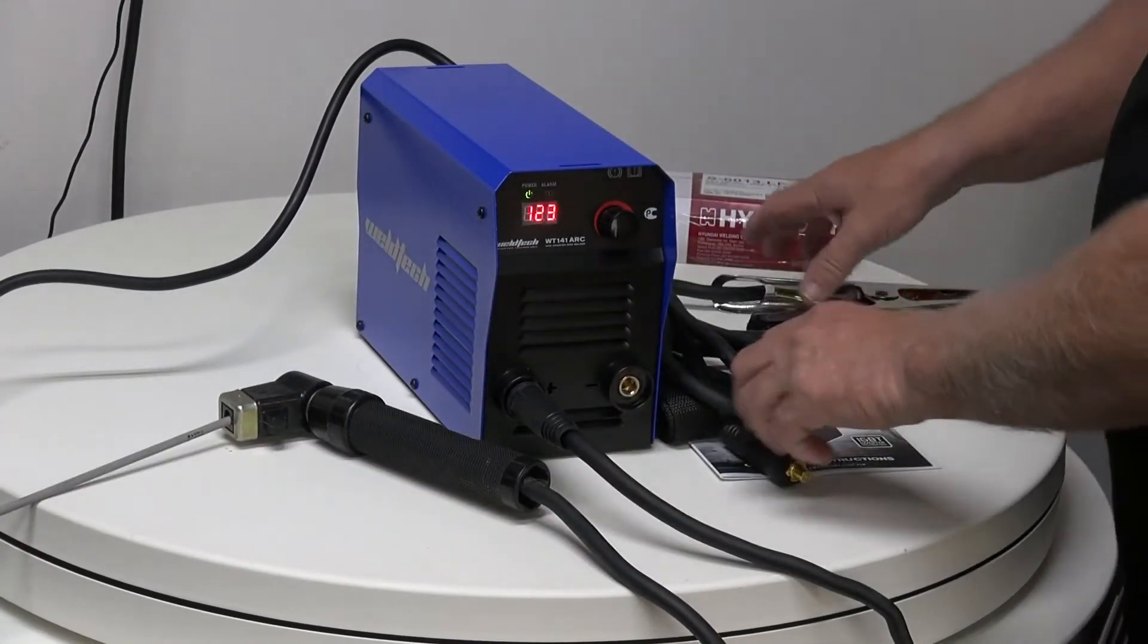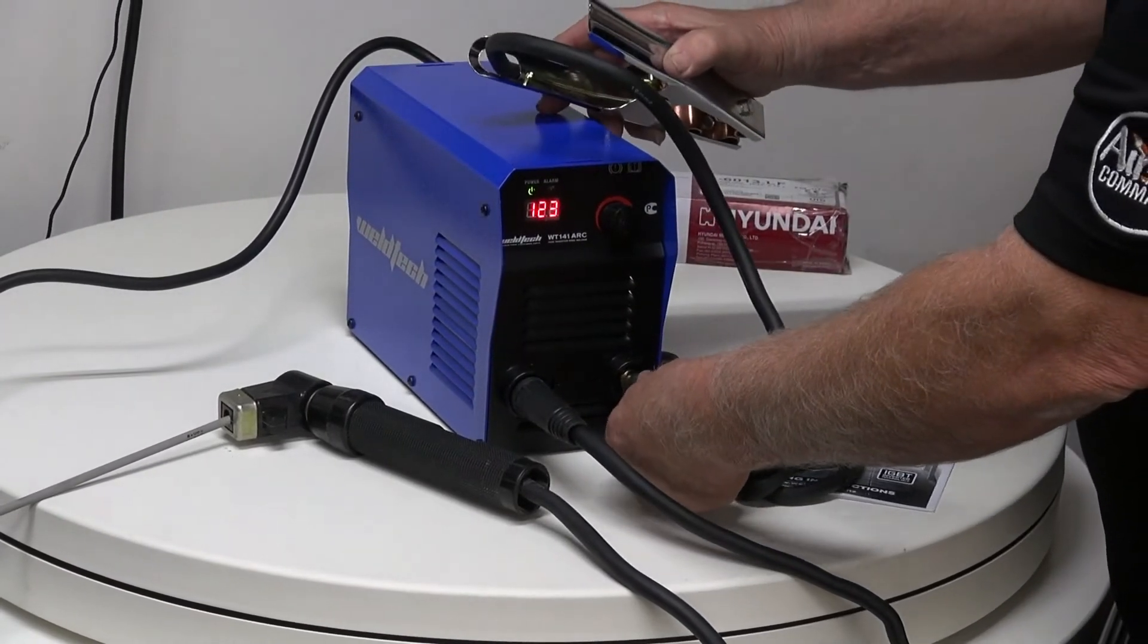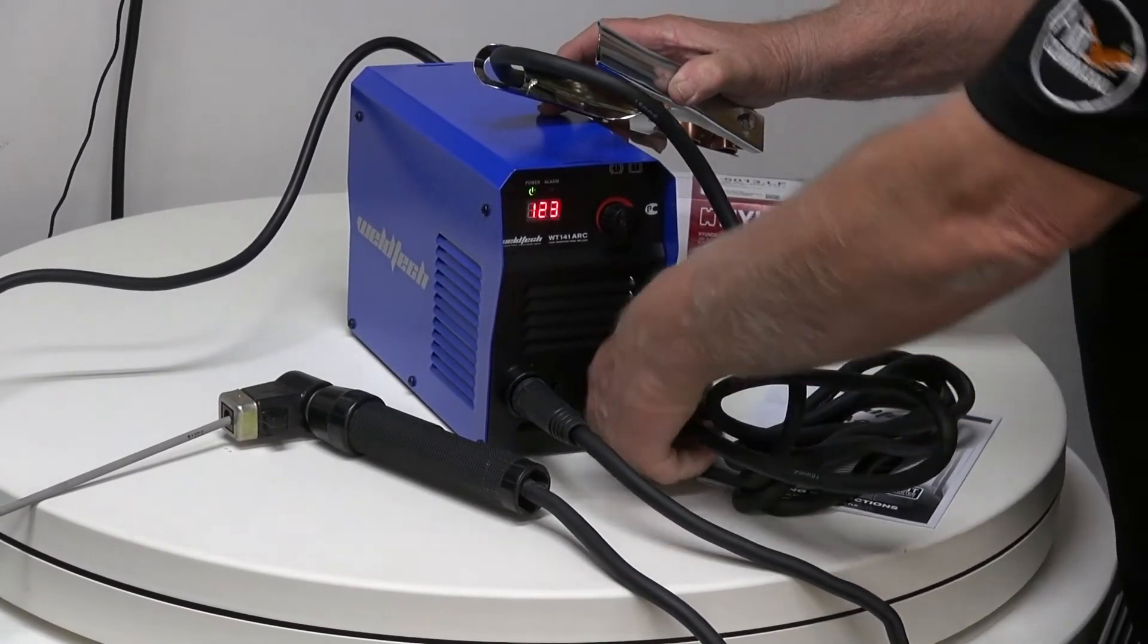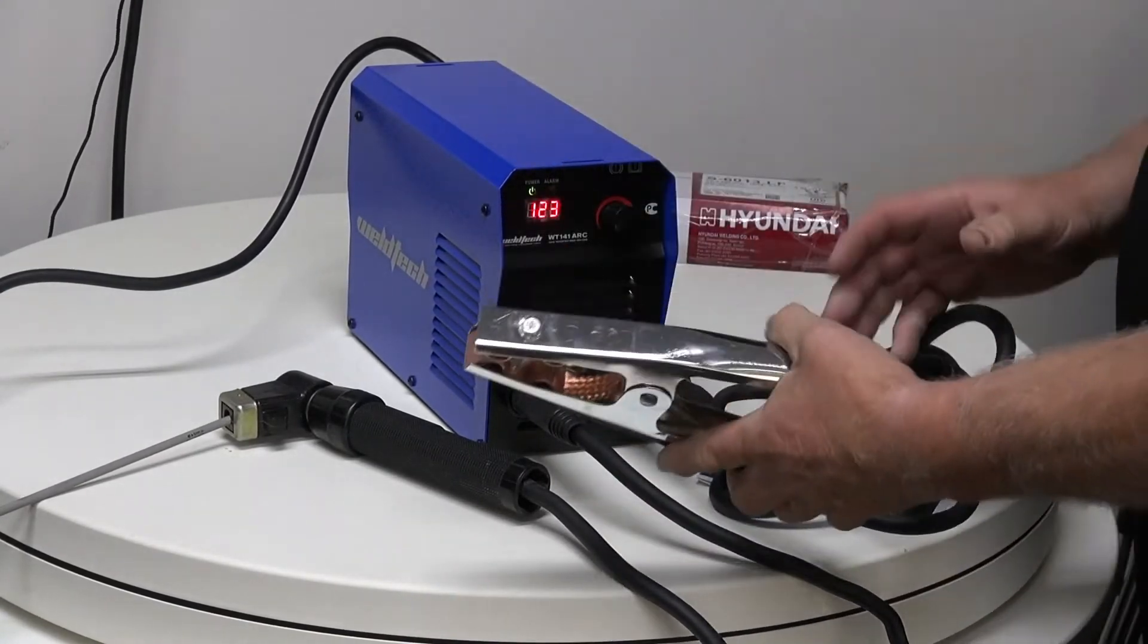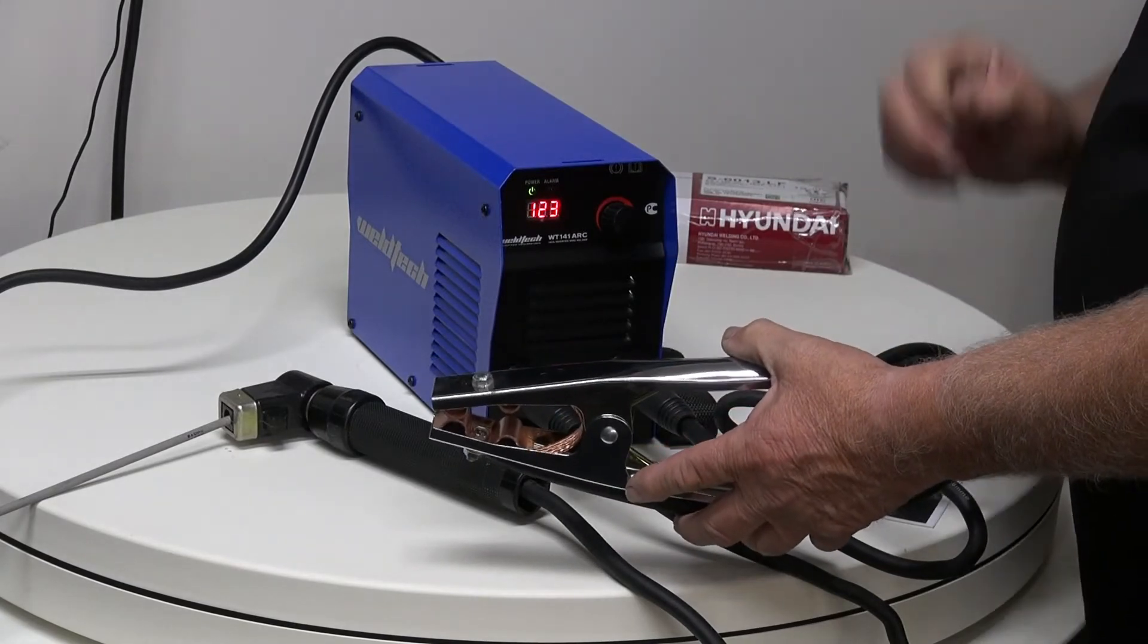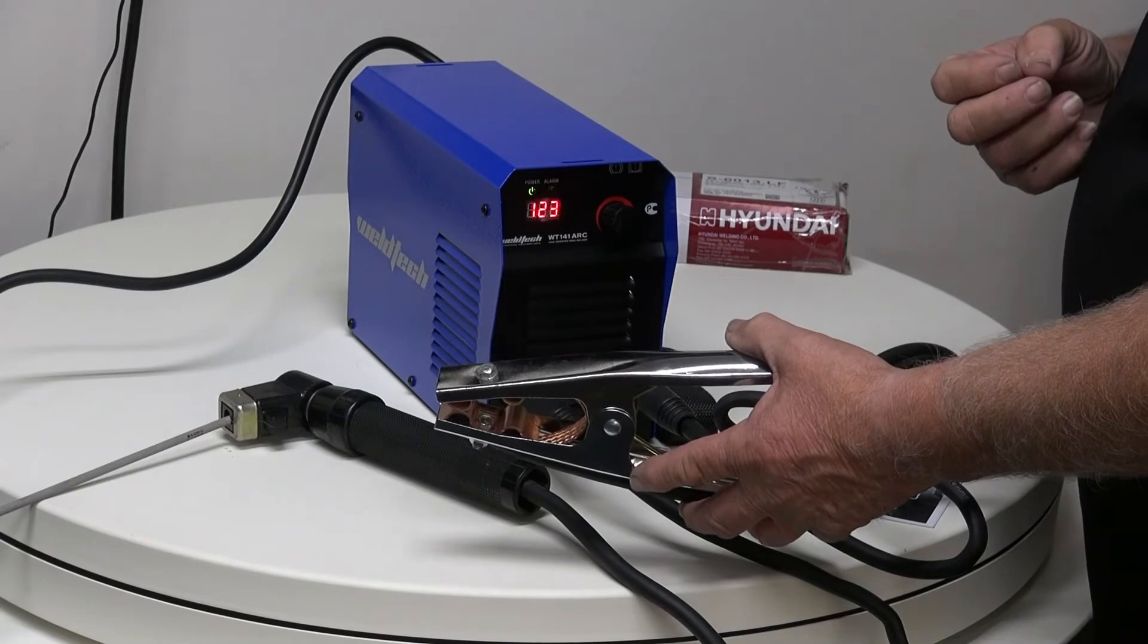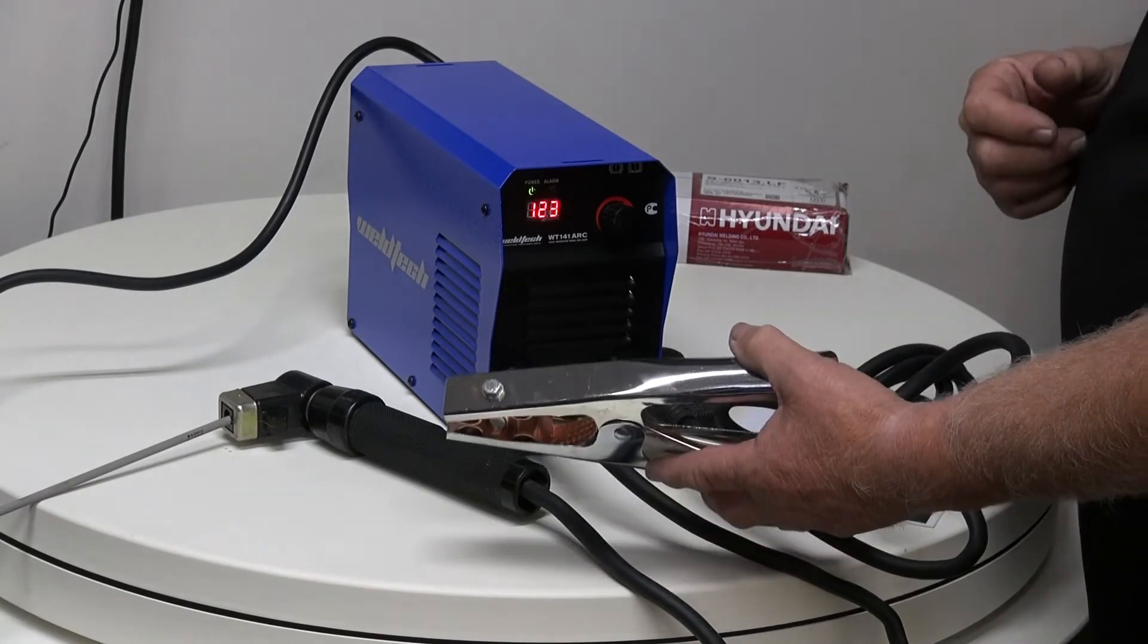Now the earth will always go on the opposite side. So we can put the earth in here. Make sure again it's locked in really tight. And make sure you get a good contact on whatever you're welding. Because if you don't have a good welding contact with the earth, you will not get a good circuit. You will not get a good start, and your electrode will not run correctly.